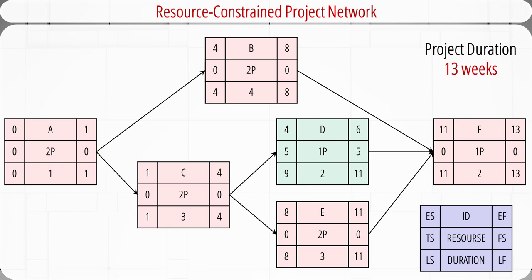This is the new project network with updated start times, finish times, and slacks. The critical activities are marked in pink. The number of critical activities has increased from 4 to 5.